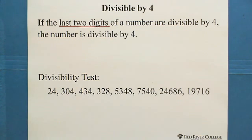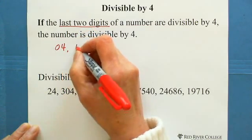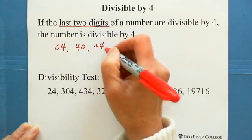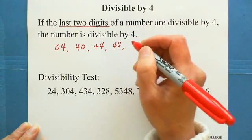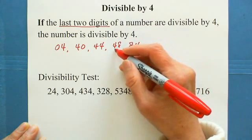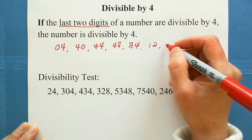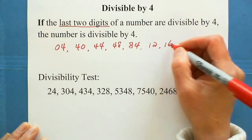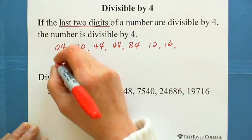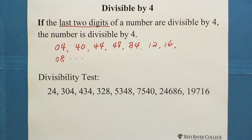Looking at the last two digits: many two-digit numbers are divisible by 4. For example, if the last two digits are 04, 40, 44, 48, 84, 12, 16, or 08 — as long as the last two digits form a number divisible by 4, the whole number is divisible by 4. Let's look at some examples.